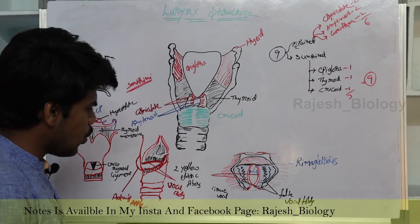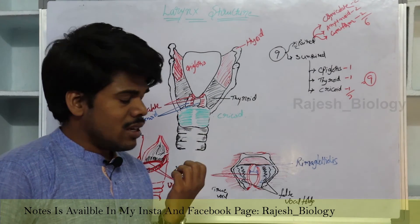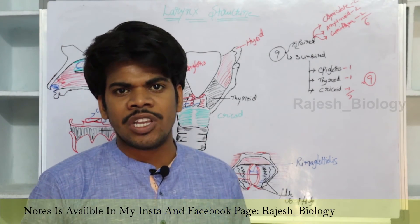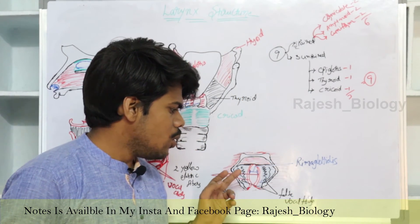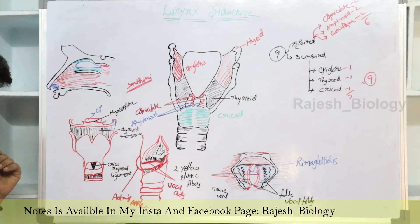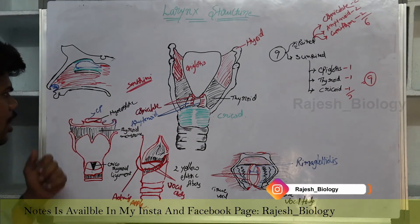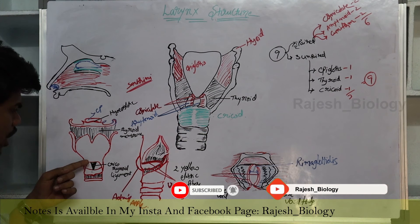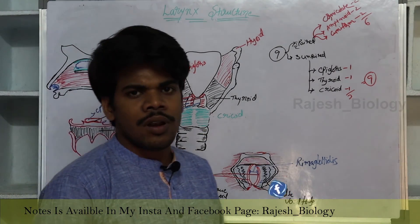An interesting fact about vocal cords: men have long and tough vocal cords, so they have a low pitch voice. Women and children have very short vocal cords, so their voice is at a high pitch. There is a membrane between the epiglottis and hyoid bone known as the hyoepiglottic membrane, a thyroid membrane, and a cricothyroid ligament present between the cricoid and thyroid. This is about the larynx.